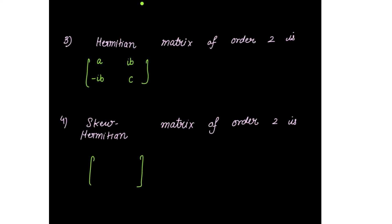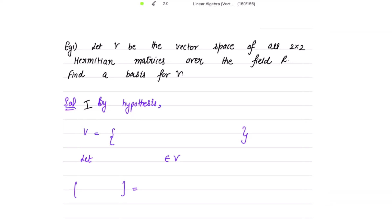For the skew-Hermitian matrix of order 2, write 0, 0 in the diagonal and then iota*a and negative iota*a — it's your choice whether you use x or y. So the form of the matrices for Hermitian and skew-Hermitian is like this. Now let's find out the basis for Hermitian and skew-Hermitian matrices.